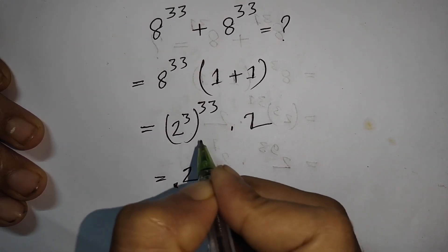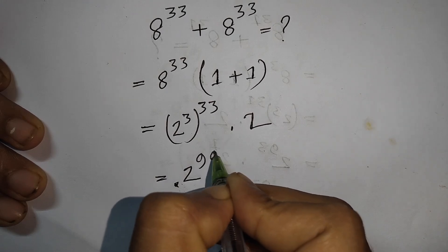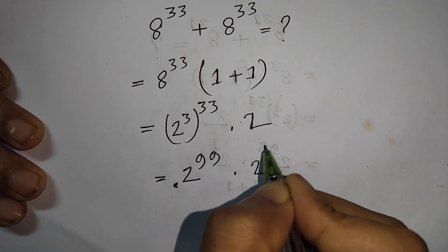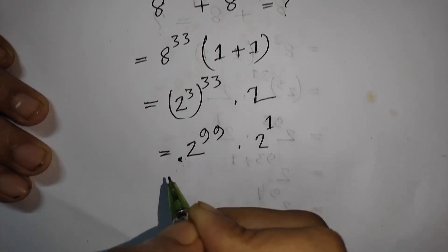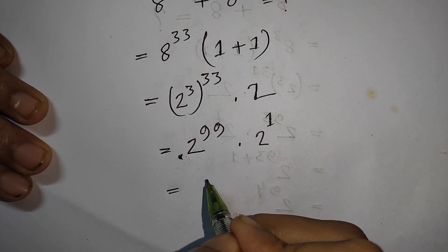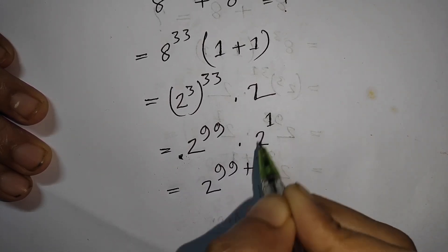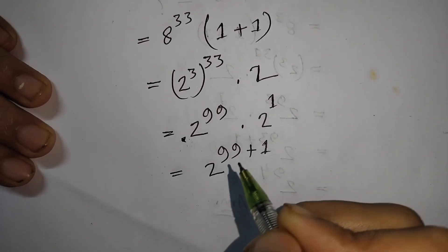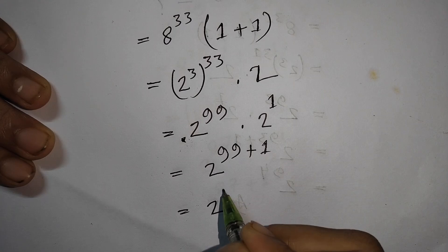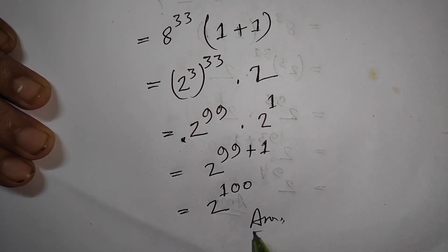So we have 2 to the power 3 times 33, which is 99, multiplied by 2, which is 2 to the power 1. Since the bases are both 2, we add the exponents: 2 to the power 99 plus 1 equals 2 to the power 100. So 2 to the power 100 is the correct answer.